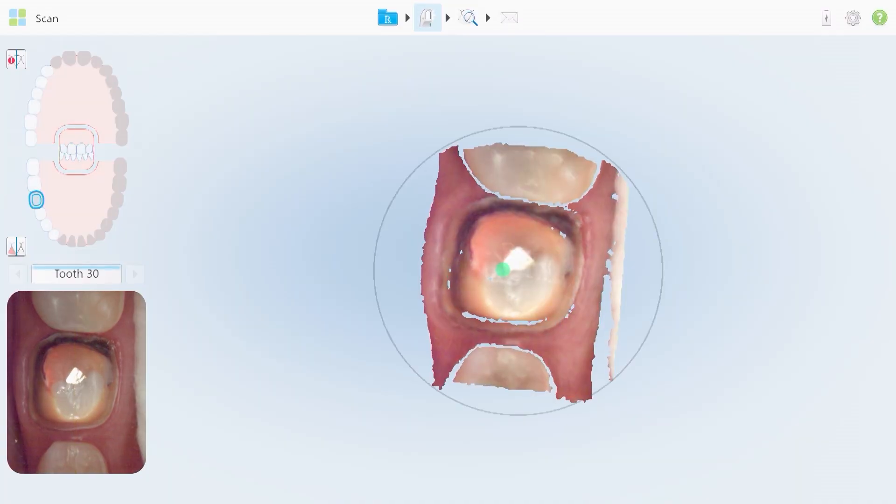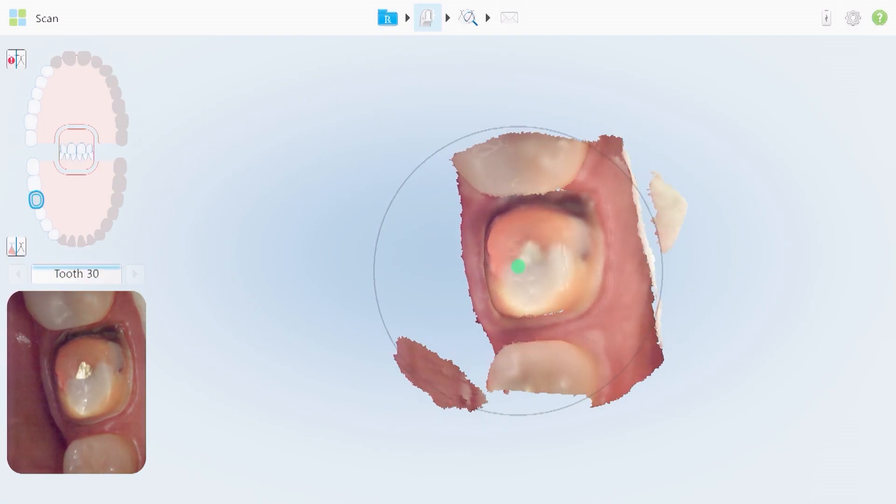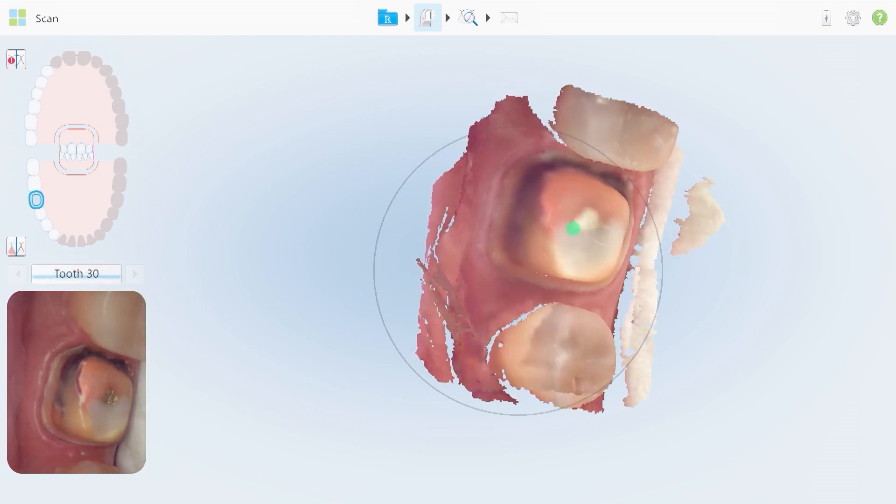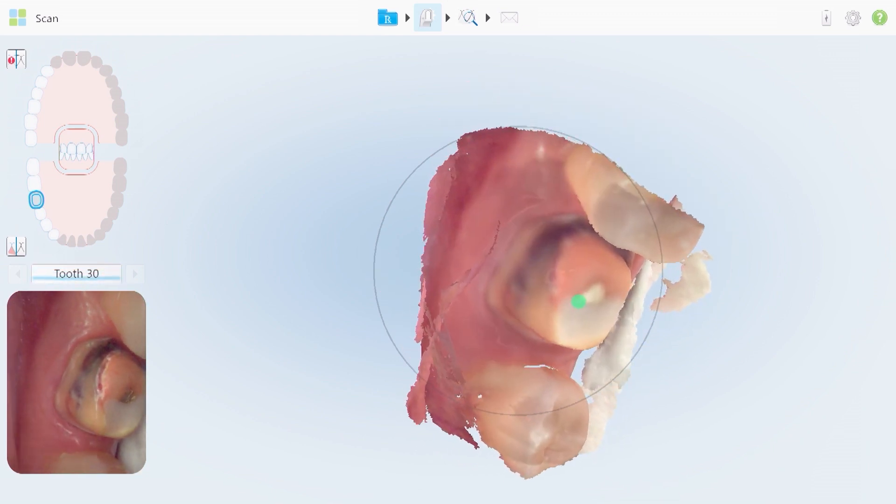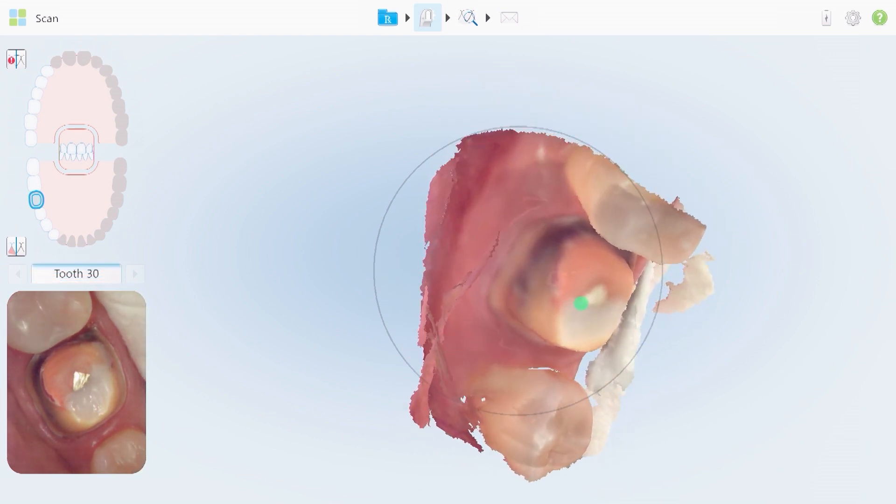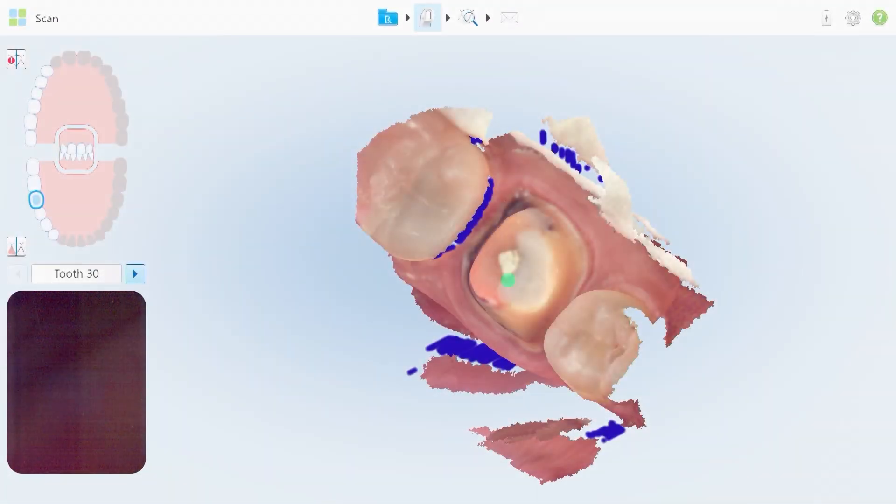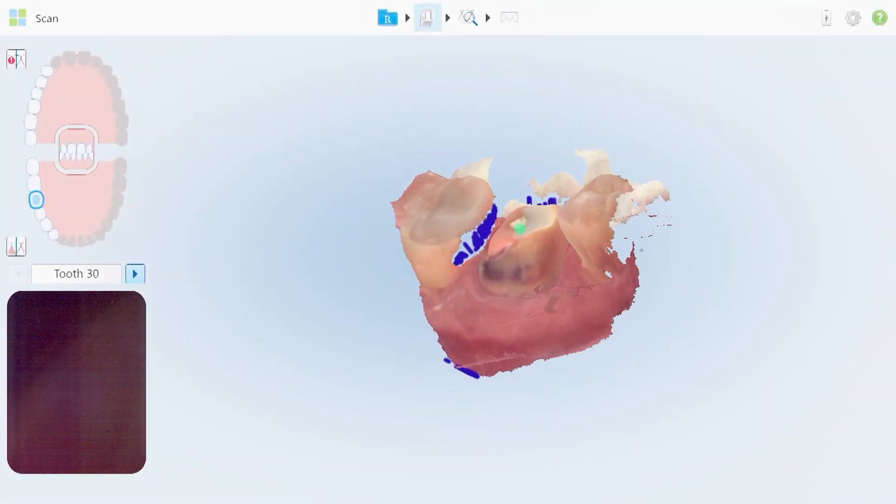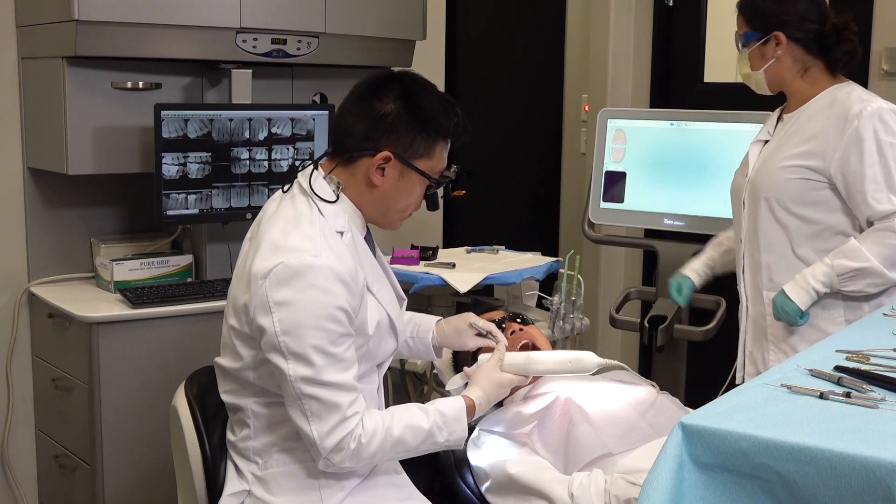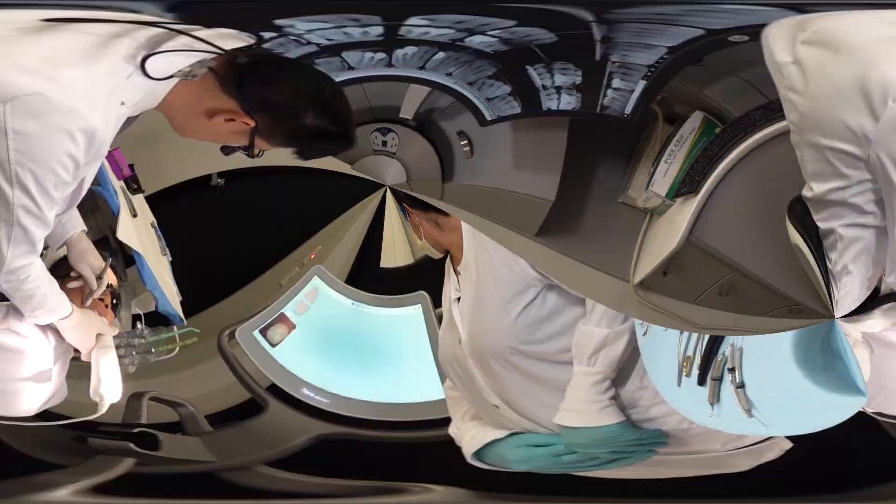I'll activate the camera over the preparation. In this case with the iTero Element, the first scan that we capture will be of the preparation. The more dry the area is, the easier the scanner will capture the site. Now we've captured the preparation and we'll move on to our quadrant scans.